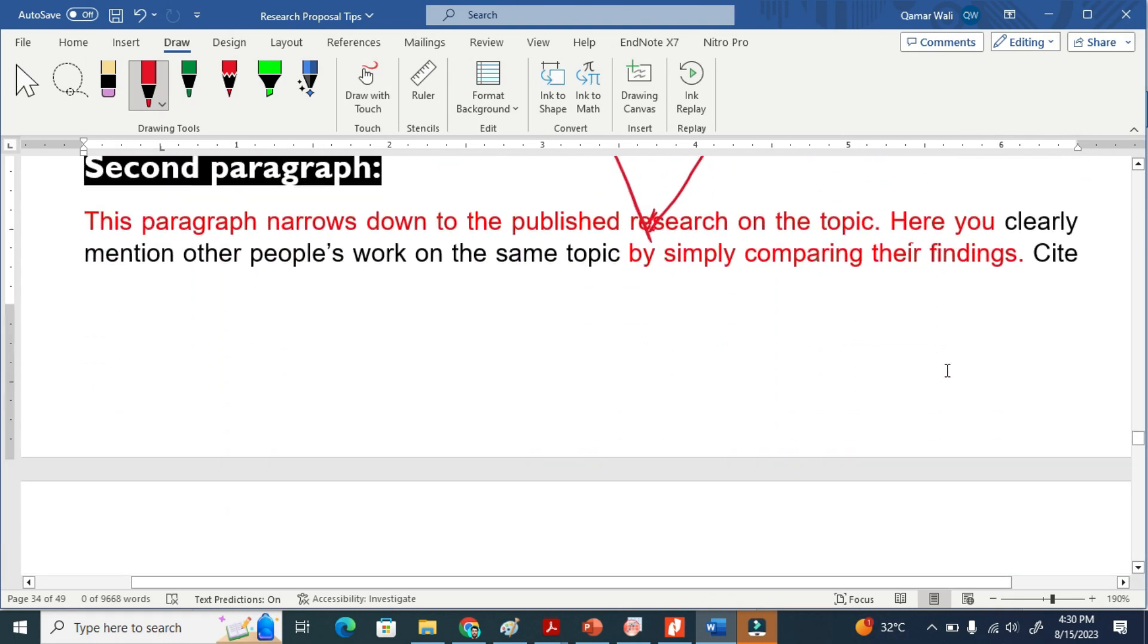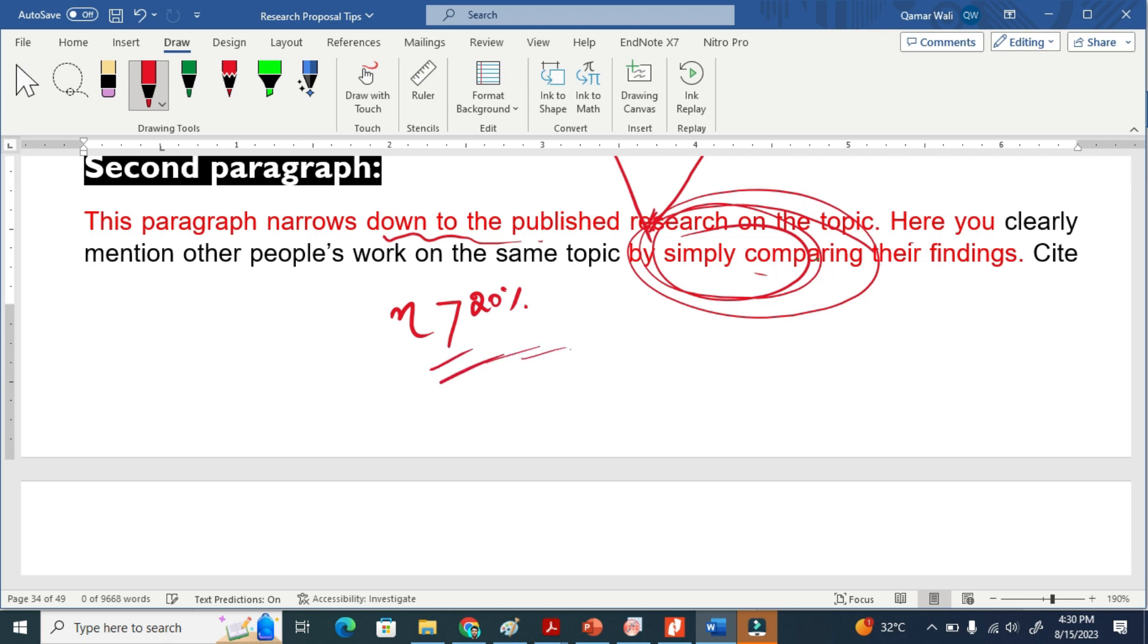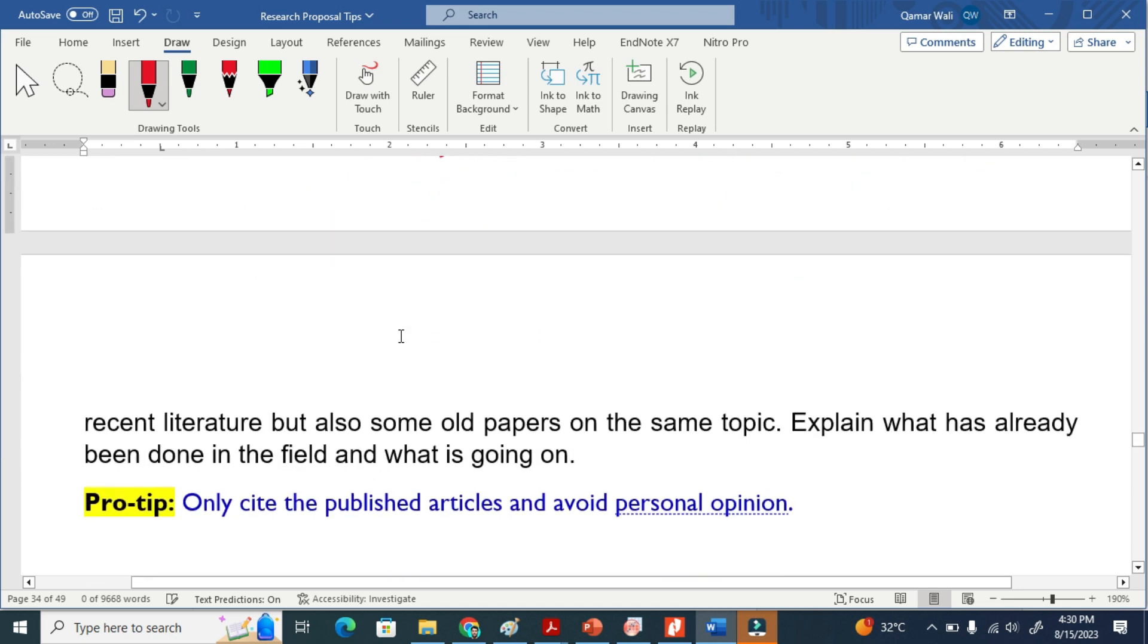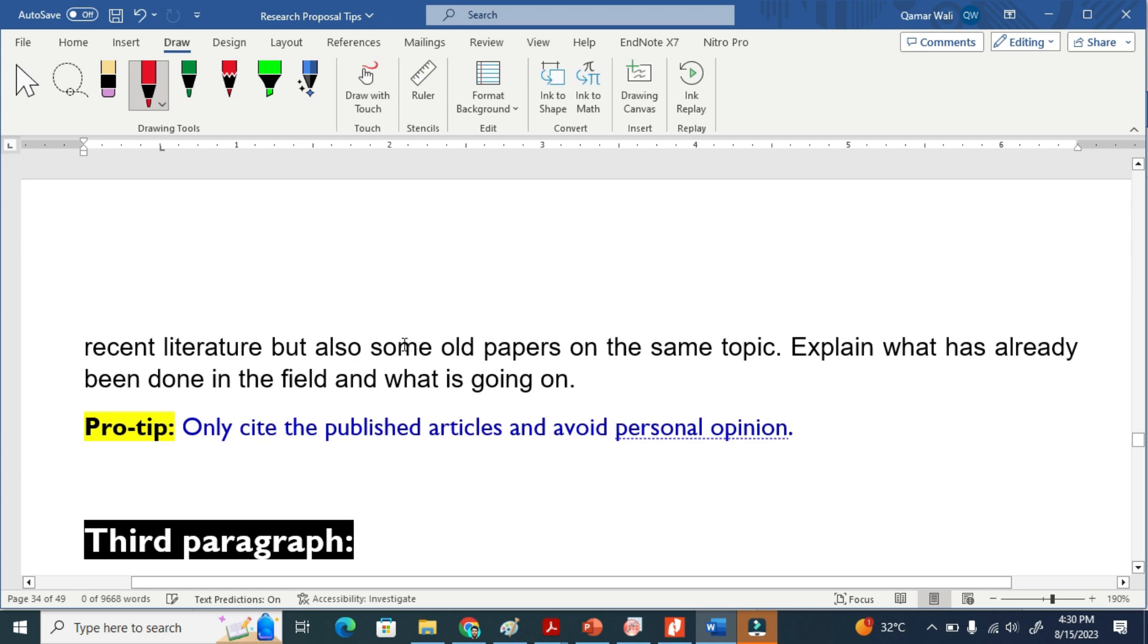The second paragraph - now once we have the first paragraph, we have to take the research articles published in the field and compare and contrast other researchers' works. That this person did this and that and got efficiency greater than 20 percent, they used this material, whatever. So we have to discuss other people's work in this paragraph about their specific topic.